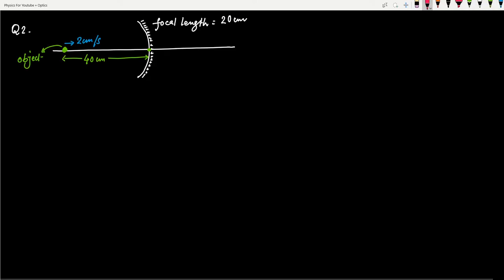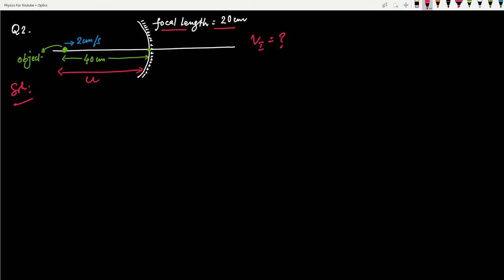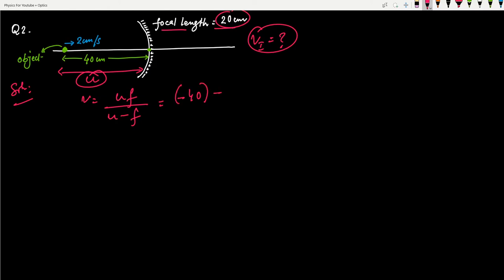This second question: a spherical mirror has focal length of 20 centimeters, and the object is placed at a distance of 40 centimeters in front of the mirror. The object is moving at 2 centimeters per second. Find the velocity of the image. Here, v is not given — only u and f are given. So we find v using the mirror formula: v equals uf/(u minus f). Substituting u equals minus 40 and f equals minus 20 for a concave mirror: v equals (minus 40 × minus 20)/(minus 40 minus (minus 20)).